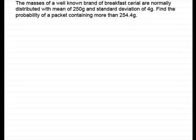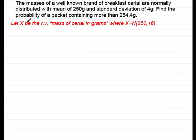The first thing we need to do is to define a random variable X, which is going to represent the mass of cereal in grams. X is distributed normally with a mean mu of 250, and the second parameter is the standard deviation squared — sigma squared. If we square the standard deviation of 4, we get 16. So X ~ N(250, 16).